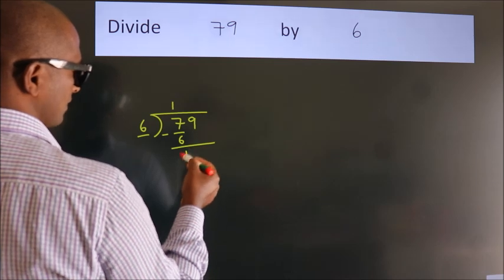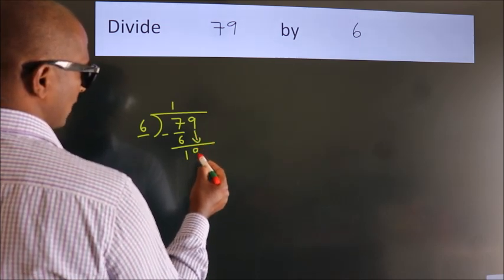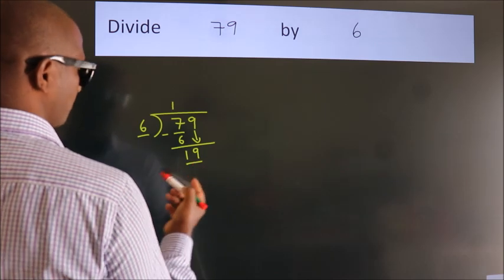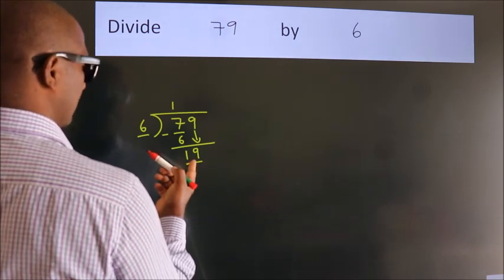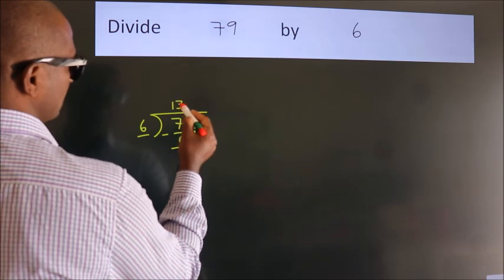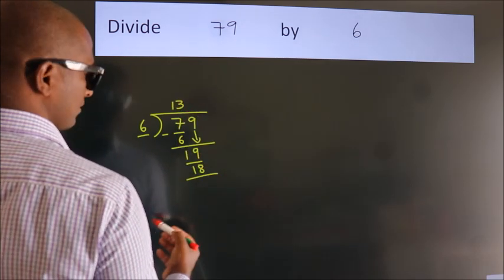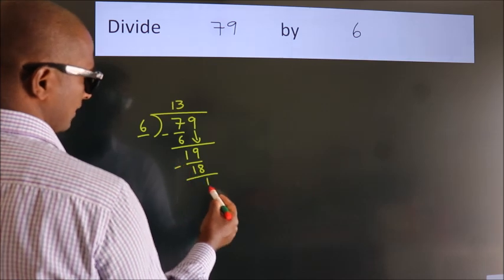After this, bring down the beside number. So 9 down, giving us 19. A number close to 19 in the 6 table is 6 threes, which is 18. Now we subtract and get 1.